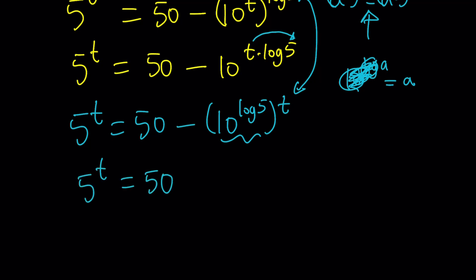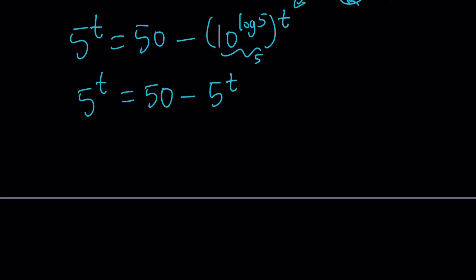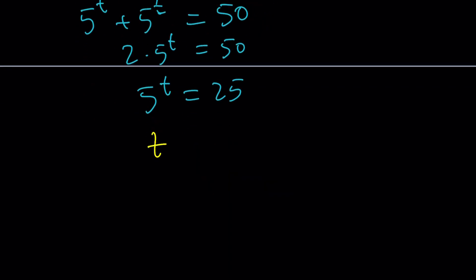5 to the t equals 50 minus 5 to the t because this is 5. Awesome. Let's take a look. We have like terms. They're like each other. What can I do? 5 to the t plus 5 to the t equals 50. And then, you could just divide by 2 because this is 2 times 5 to the t. And then this gives us 5 to the t equals 25. That's nice, isn't it?